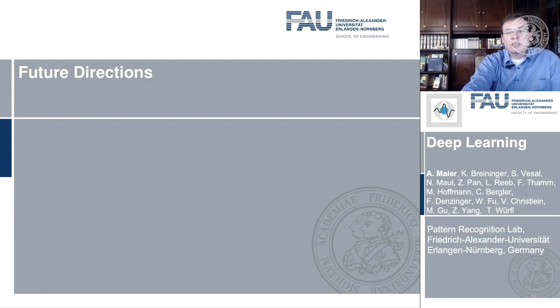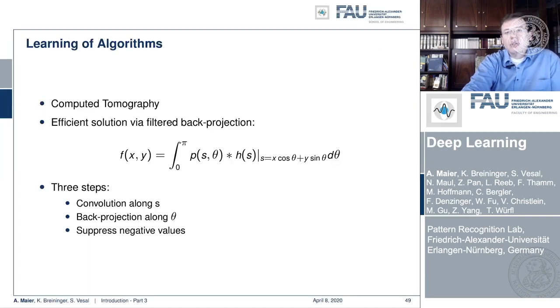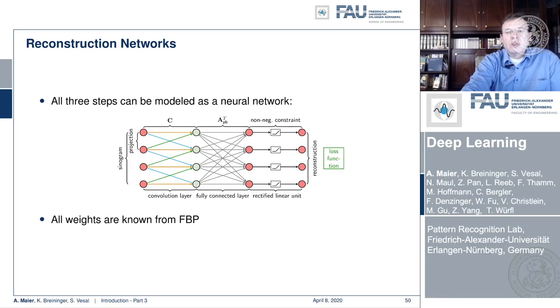This brings us to future directions. Something we like to do here in Erlangen is learning of algorithms. For example, you can show that classical computed tomography, expressed in the filter back projection formula — where you have a filtering along the projection direction and then a summation over the angle to produce the final image — can be expressed in terms of linear operators. The convolution and back projection are essentially matrix multiplications, and those matrix multiplications can be implemented as a neural network, giving you an algorithm or network design that can be trained for specific purposes.